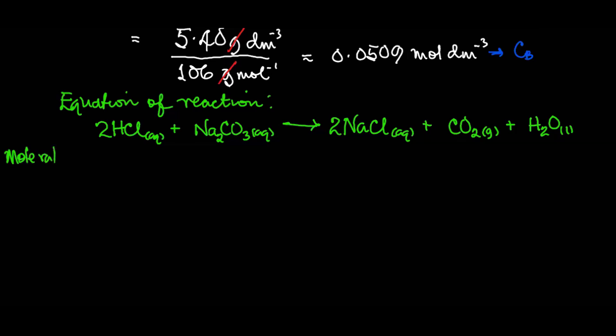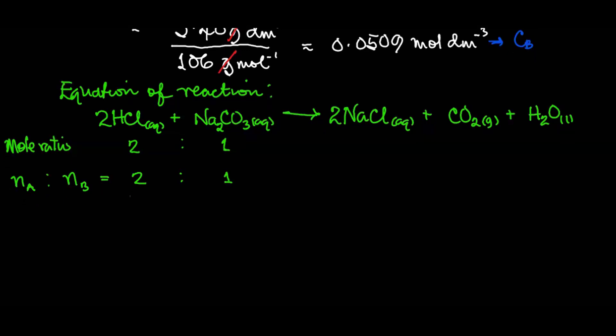That gives us the equation of the reaction. And the mole ratio here is 2 to 1, which means that our NA and NB ratio is 2 to 1. Alright, so next we're going to make use of the titration formula.